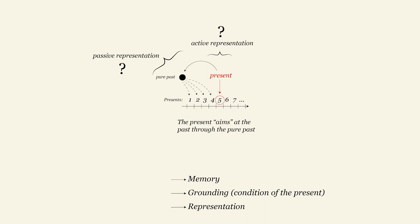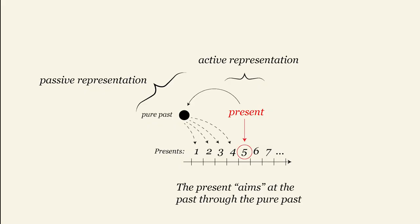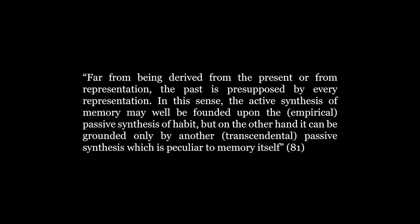One question we want to ask is, is the second synthesis passive or active? This is a problem because the passive synthesis of habits, the first level, cannot be grounded in an active synthesis. So Deleuze says this. At the moment when it grounds itself upon habit, memory must be grounded by another passive synthesis distinct from that of habit. The passive synthesis of habit, in turn, refers to this more profound passive synthesis of memory. Habitus and Mnemosyne, the alliance of the sky and the ground. But on the other hand, re-presenting past moments in the present requires an activity of the mind. So the second synthesis appears also to be active. Here is what Deleuze says. Far from being derived from the present or from representation, the past is presupposed by every representation. In this sense, the active synthesis of memory may well be founded upon the empirical passive synthesis of habit. But on the other hand, it can be grounded only by another transcendental passive synthesis, which is peculiar to memory itself.